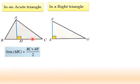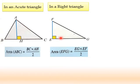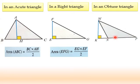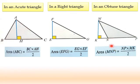In a right triangle, we have a right angle, so the two legs are perpendicular. FE is perpendicular to EG, so FE is the height and EG is the base. The area is EF times EG over 2. In an obtuse triangle, the height is outside the triangle — we cannot draw a perpendicular to NP inside the triangle. So the height MK is outside, the base is NP, and the area is NP times MK over 2.